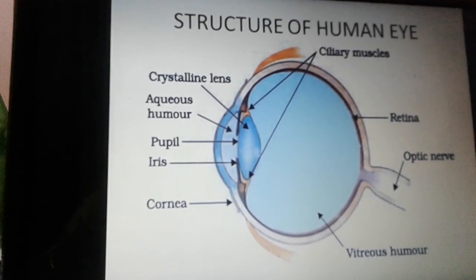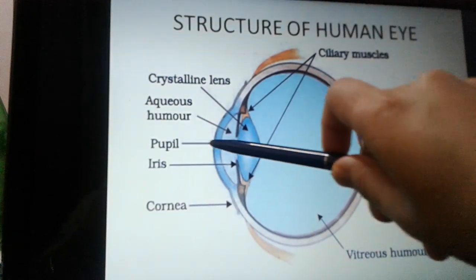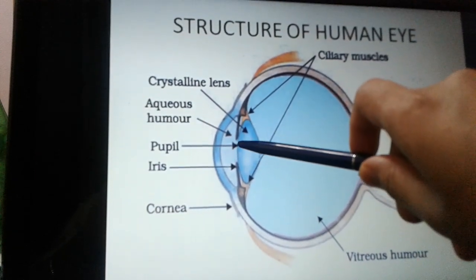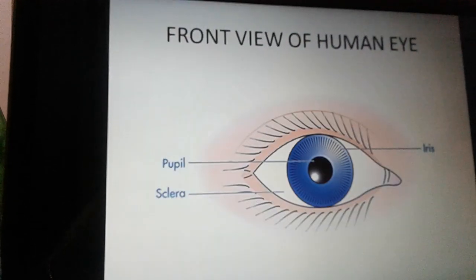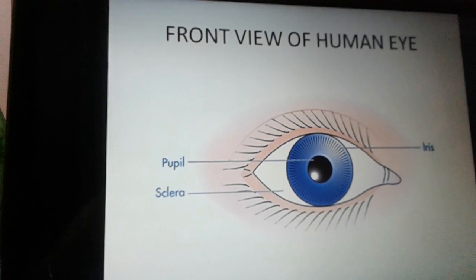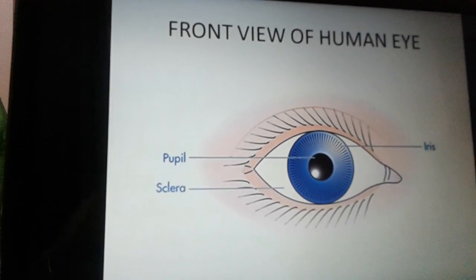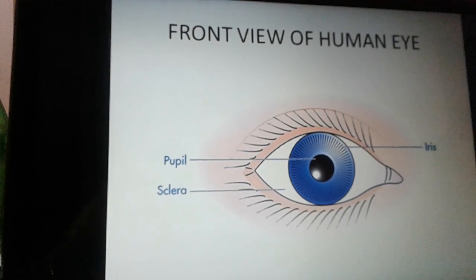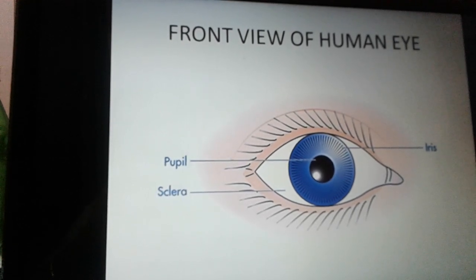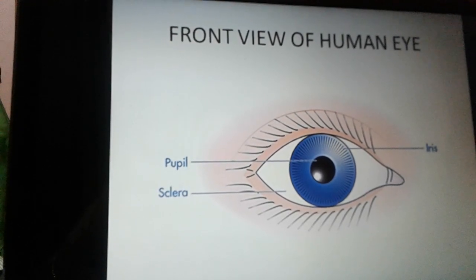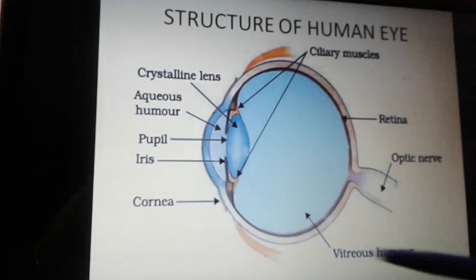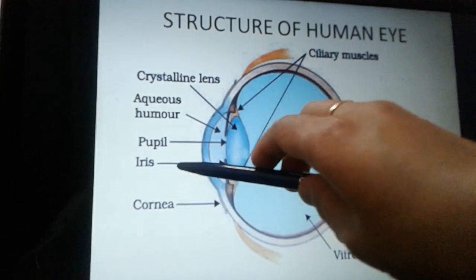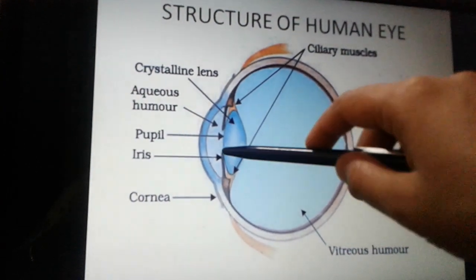The second point is the pupil. You can see it is the centermost part, and if you have a front view of your eye, this black portion that you can see represents the pupil. This black portion contracts or expands whenever the intensity of light is high or low. This happens because of the iris — the iris is a dark muscular diaphragm.